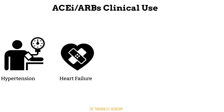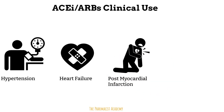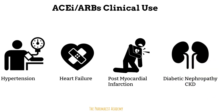Angiotensin 2 will then come and make everything worse, so once again, ACE inhibitors and ARBs will save the day. We also use these agents for heart attacks, where your heart may not be functioning as well due to damage, leading to a reduced amount of blood that pumps out and subsequently reduced renal blood flow. Lastly, in patients with diabetes and kidney disease, ACE inhibitors and ARBs are used to slow the progression by decreasing proteinuria.